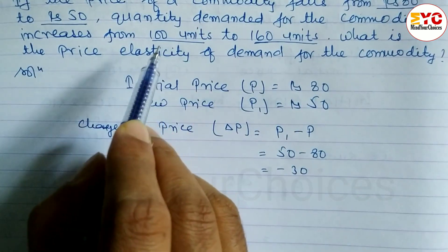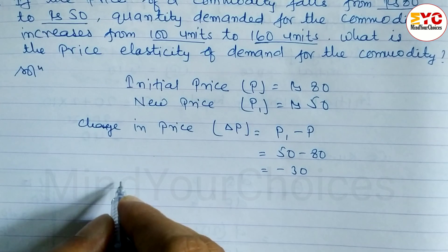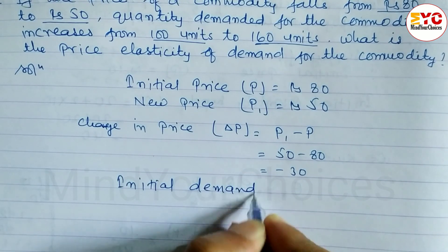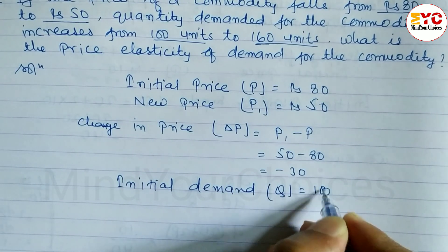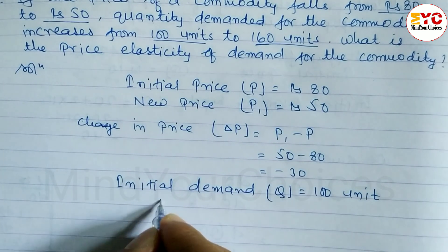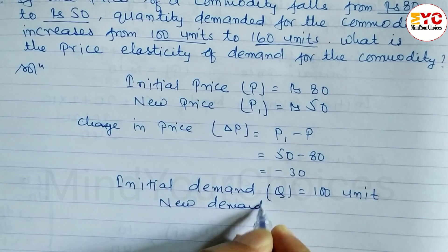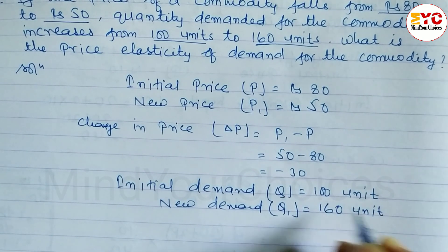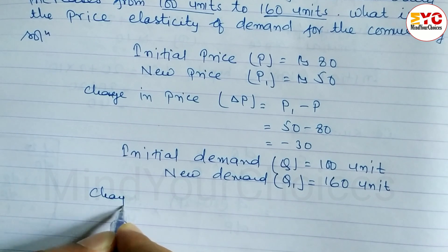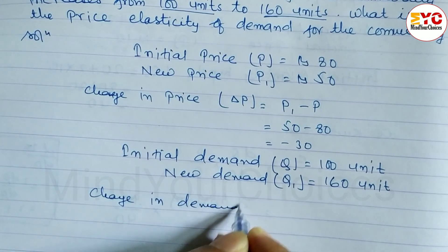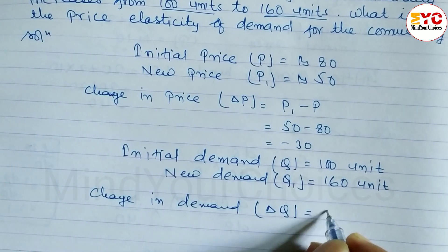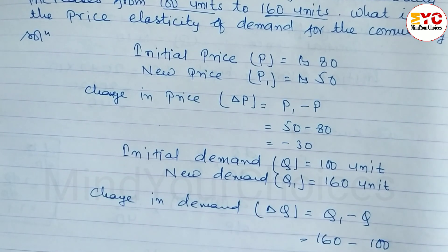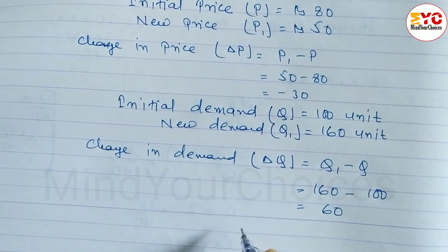Similarly, quantity demanded increases from 100 to 160. Initial quantity demanded Q is equal to 100 units, and new demand Q1 is equal to 160 units. Change in quantity demanded: ΔQ = Q1 minus Q = 160 minus 100 = 60 units.